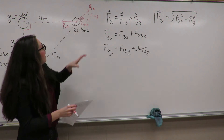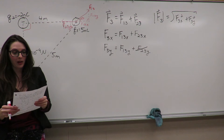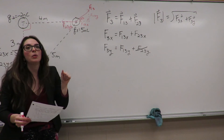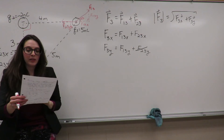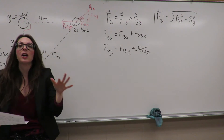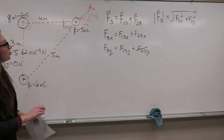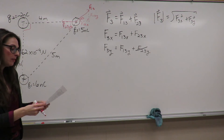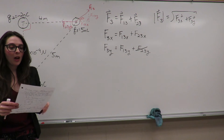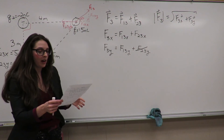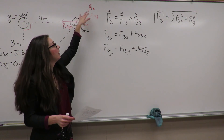This angle theta in the vector triangle is the same as the angle theta inside the charge triangle. This comes from geometry: when two lines cross, the angles opposite each other are equal — these are called vertical angles because they share the same vertex. So we've identified that F13 has both x and y components, and before finding those we need the magnitude of F13.